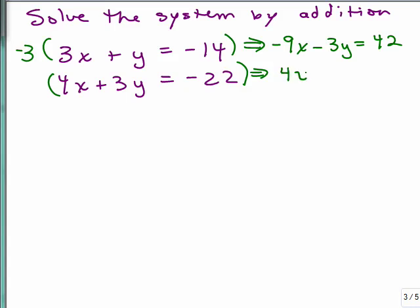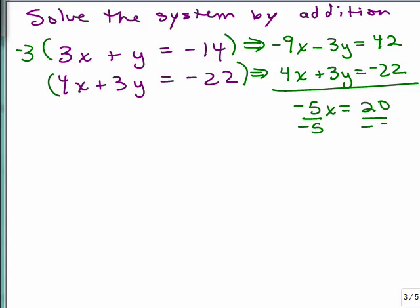It's a common mistake only multiplying it on the left side. In the bottom, I'm not going to multiply it by anything, I'm just going to copy it down again. Then go ahead and add. On the left negative 5x, on the right you get 20. Divide by negative 5, so x is going to be negative 4.